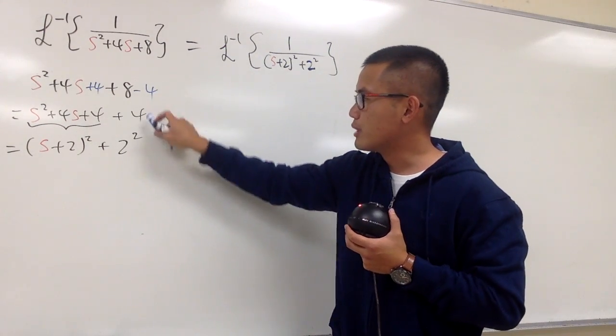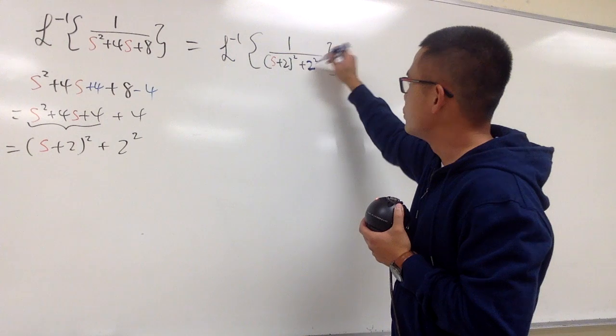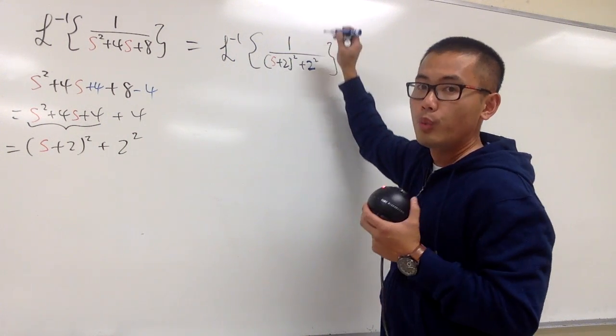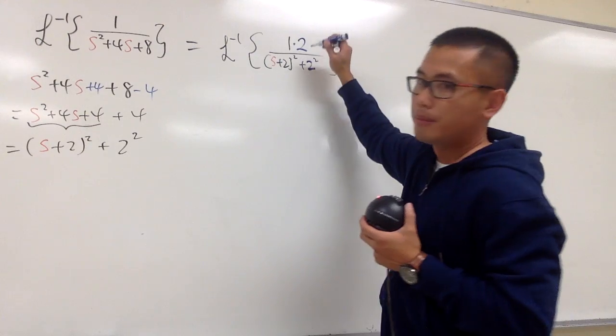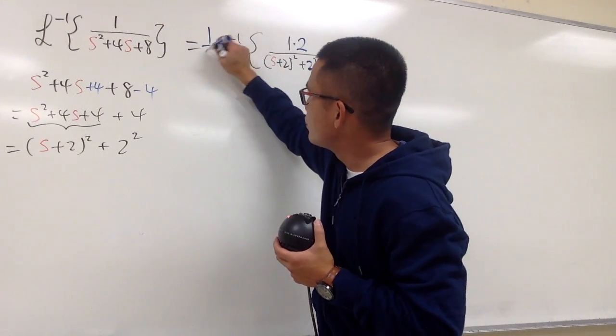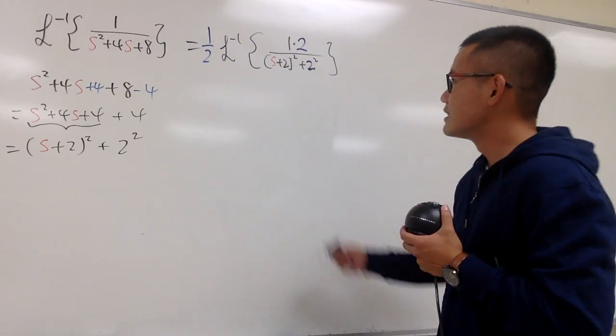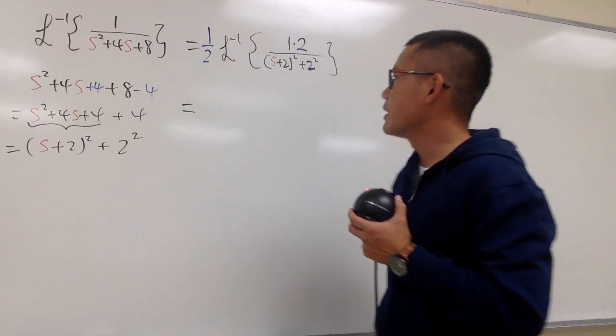Yes, earlier we had the 4, but then you have to look at the 4 as 2 squared. This is 2 squared. Look at the blue 2. We need to have the 2 on the top. So let's go ahead and multiply that 2. But be sure, go ahead and divide that 2 out. So this is what we have.